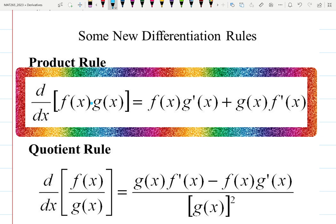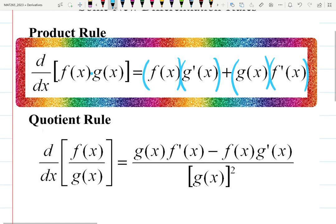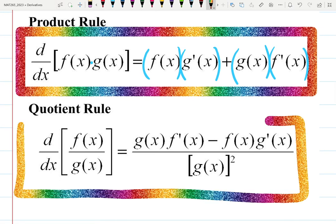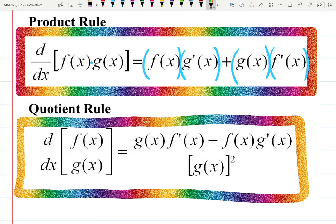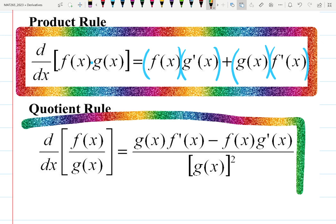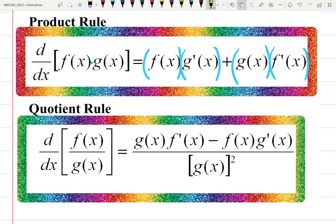You multiply not derivative by derivative — you basically switch between which one is going on. Order doesn't matter here; just make sure both pairs have one derivative and one not-derivative.